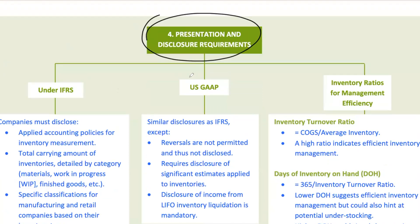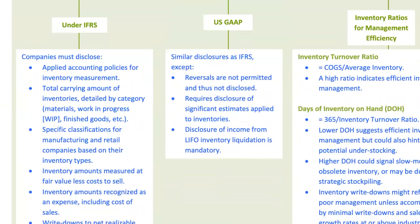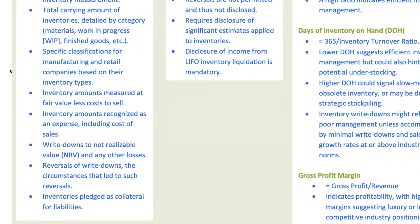Let's talk about how this information is presented and disclosed in financial statements. Under IFRS, companies need to disclose their accounting policies for inventory measurement, including the total carrying amount of inventory broken down by category — raw materials, work in progress, or finished goods. They also must disclose the amount of inventory recognized as an expense (essentially COGS), and any write-downs or reversals, along with the circumstances that led to any reversals. If any inventory has been pledged as collateral, that information must be shared as well.